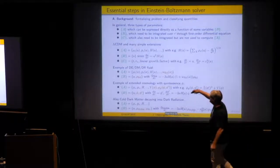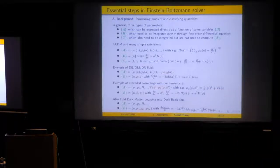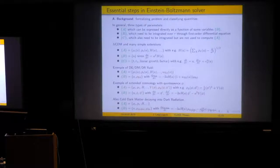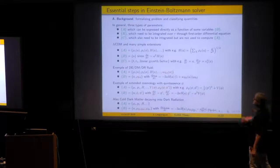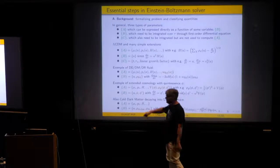For decaying cold dark matter — for instance CDM decaying into dark radiation — you add new B variables for rho_dcdm and rho_dr, integrated via equations including a decay term. The evolution equation for the decaying CDM has a first term giving a^{-3} scaling and a term showing loss from decay. The decay rate gamma_a is added as a type-A variable. This is the logic you need to understand in order to be efficient at modifying the background module.